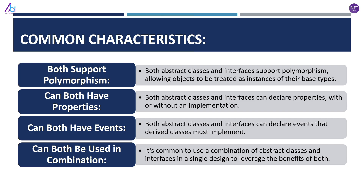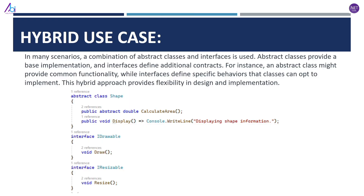Let's discuss some common characteristics shared by both. First, both support polymorphism, allowing objects to be treated as instances of their base types. Second, both can have properties — both abstract classes and interfaces can declare properties with or without implementations. Third, both can have events that derived classes must implement. Finally, they can be used in combination, and it is common to use both in a single design to leverage the benefits of each.